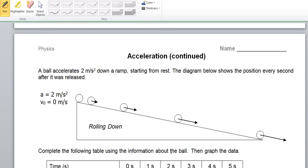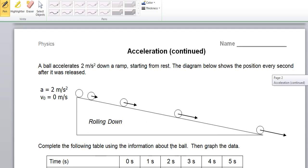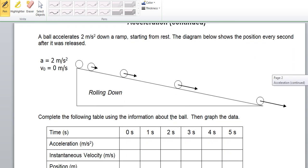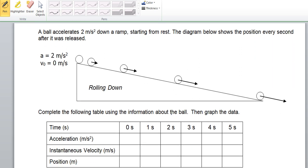Alright, scholars, thanks for tuning in. We're going to take a look at the back side of your acceleration handout. The diagram you see there is of a ball moving down a ramp. A ball accelerates 2 meters per second squared down a ramp starting from rest. The diagram below shows the position every second after it was released.